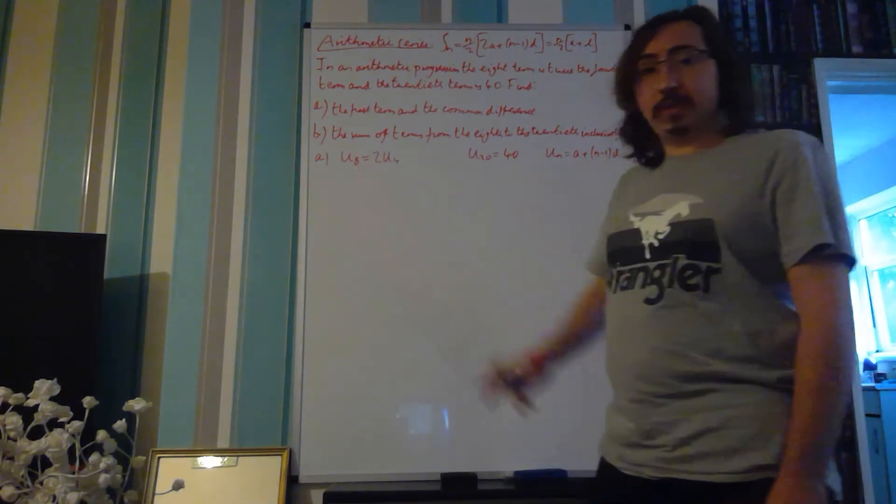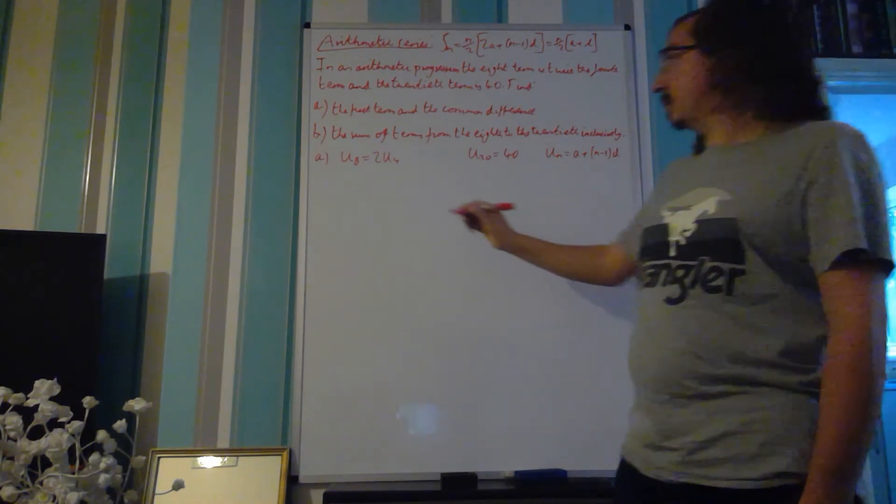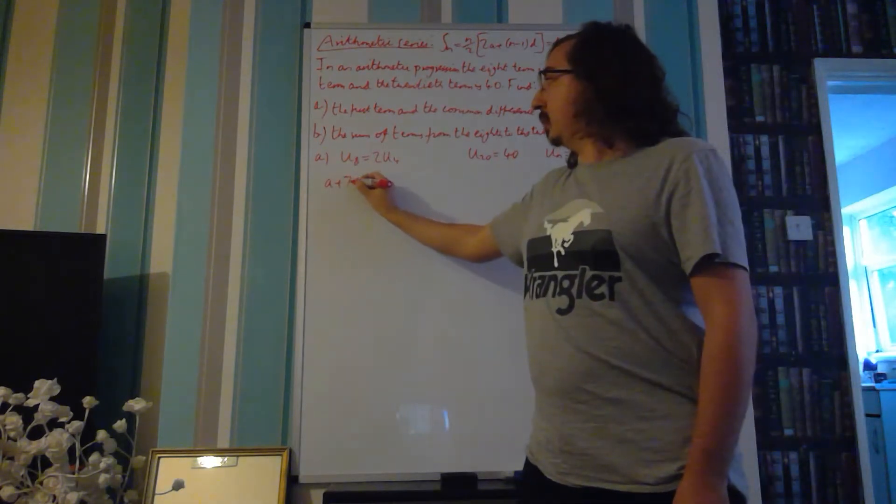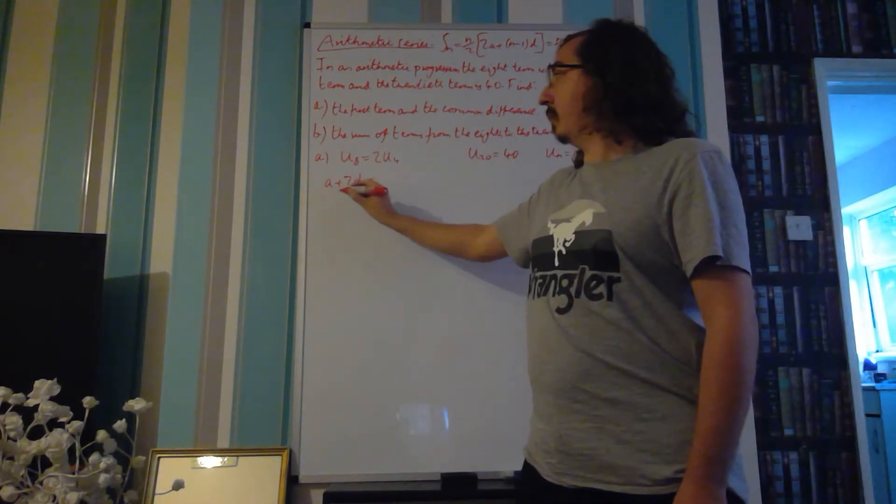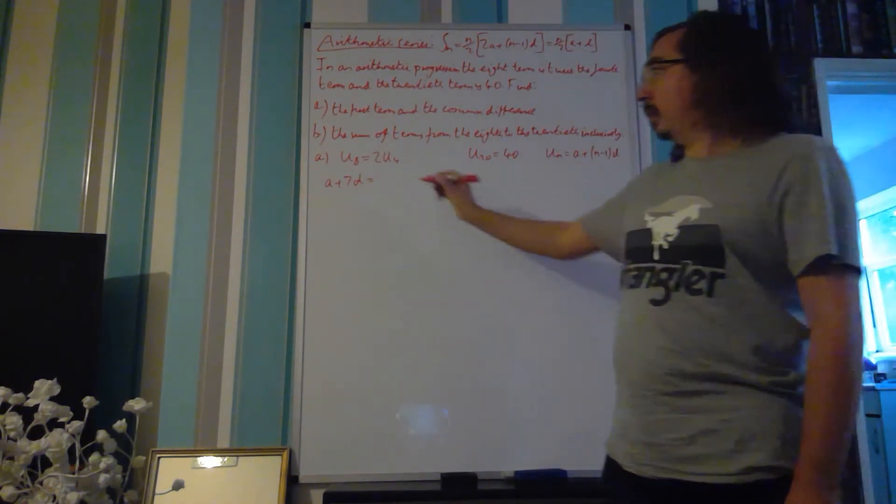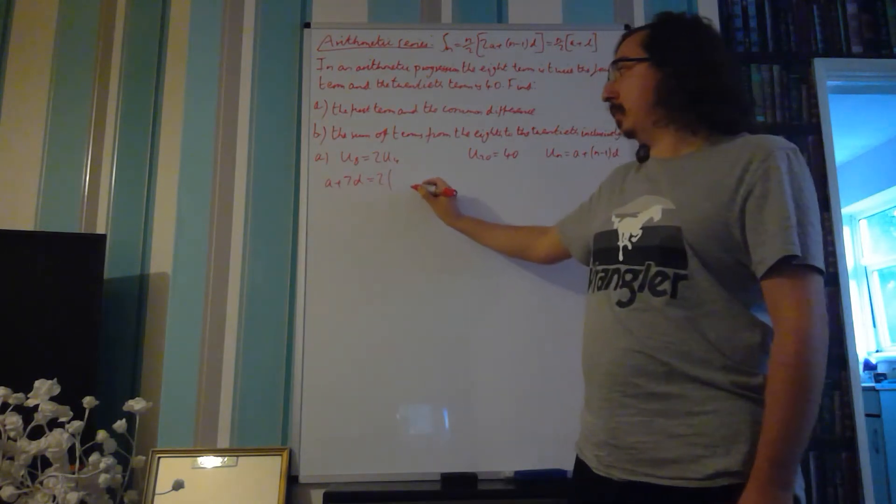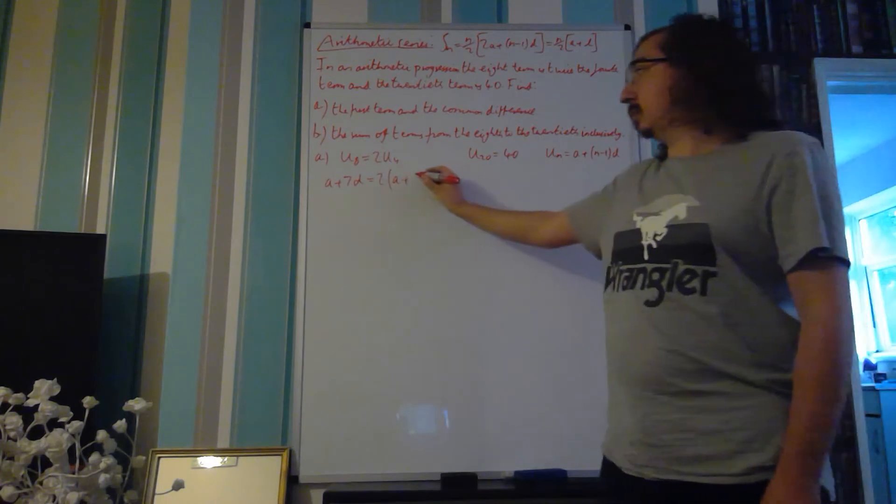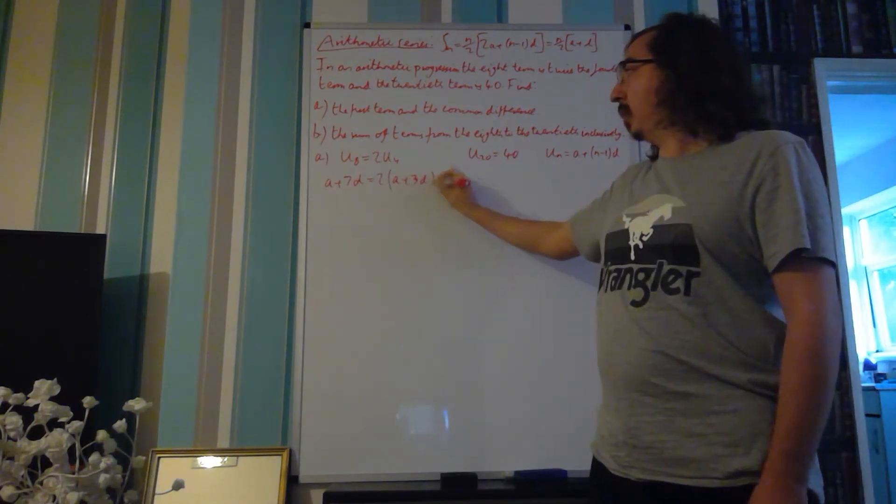We need to substitute in. So, for U8, we have A plus 8 minus 1, which is 7, so we've got A plus 7D, is equal to 2 times A plus 4 minus 1, which is 3, so A plus 3D.